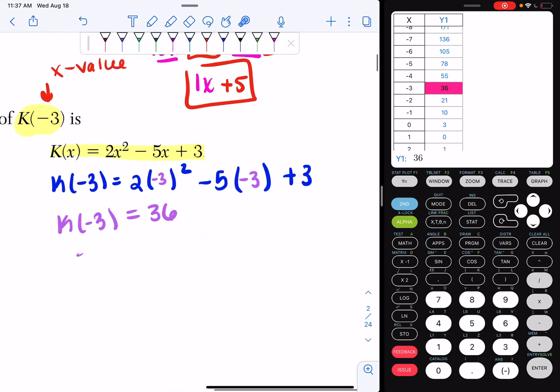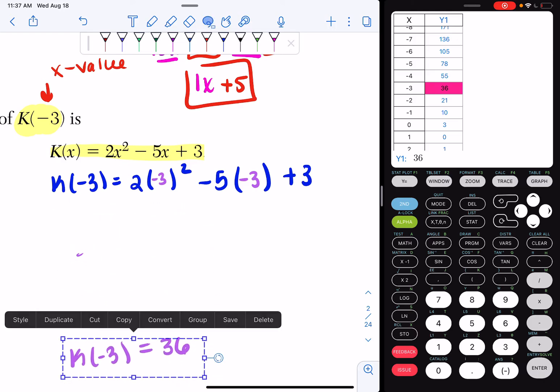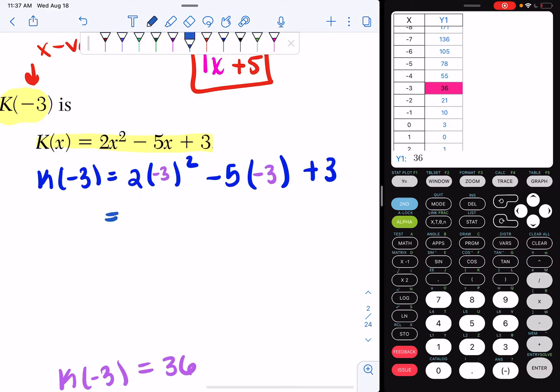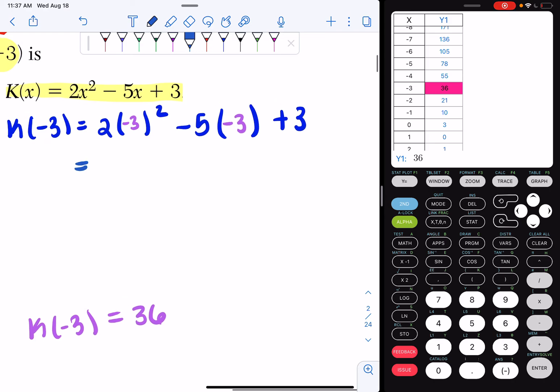If you want to use PEMDAS in order of operations, here's how you would have solved it. Well, we know negative 3 times negative 3, or negative 3 squared, is 9. So I have 2 times 9, minus 5 times negative 3, plus 3.